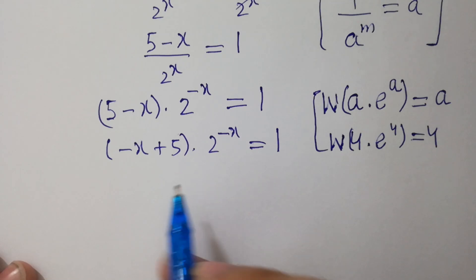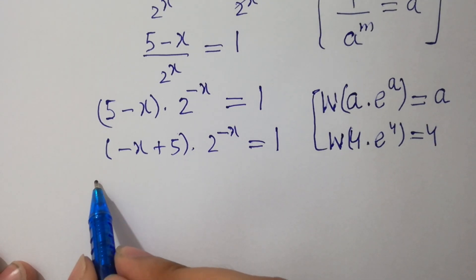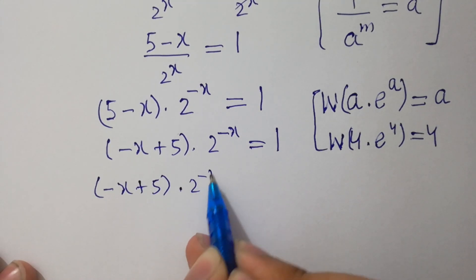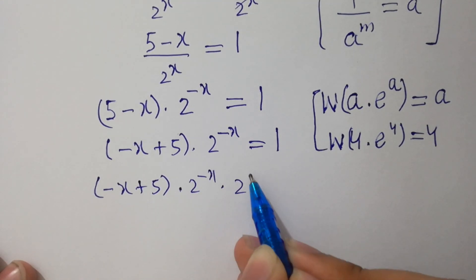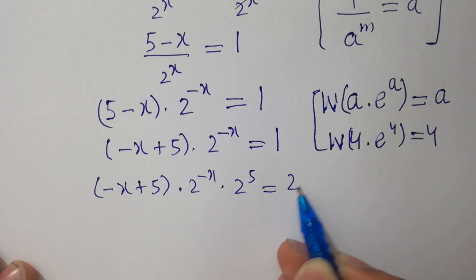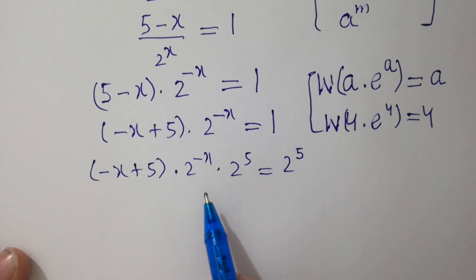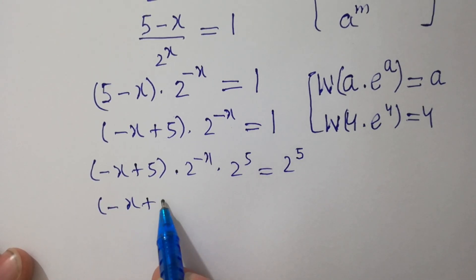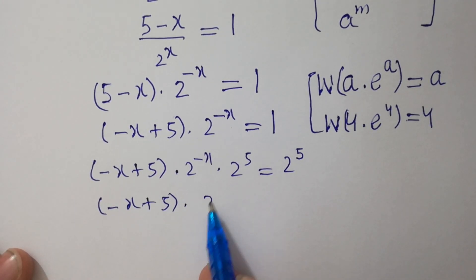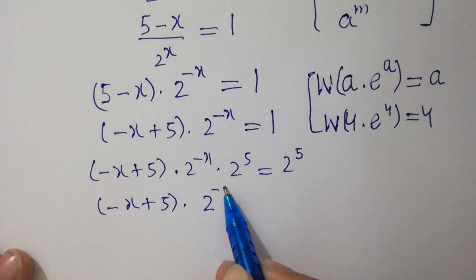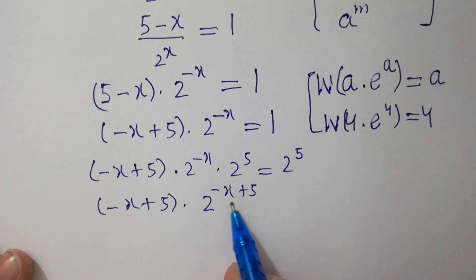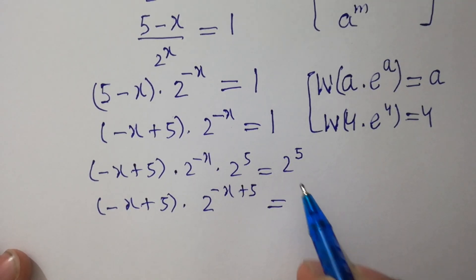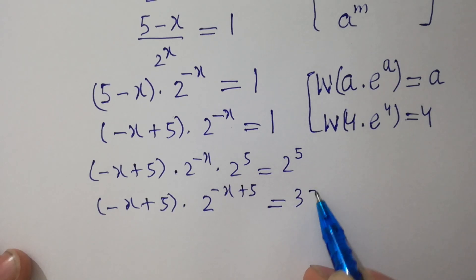Multiply both sides by 2 to the power 5. Since the bases are the same, (minus x plus 5) times 2 to the power (minus x plus 5) equals 2 to the power 5, which equals 32.